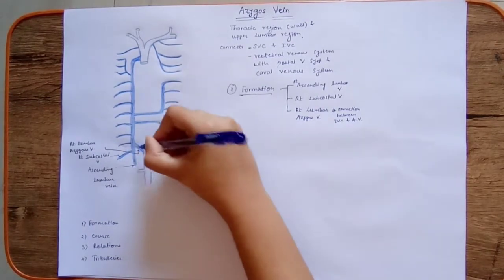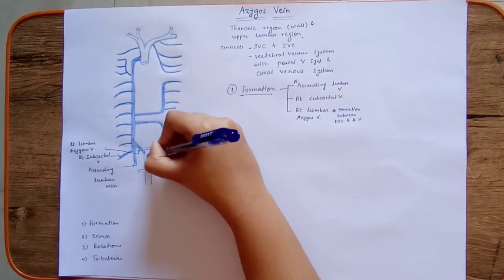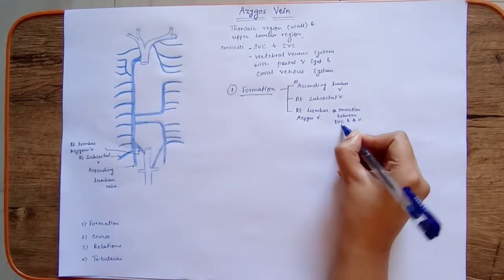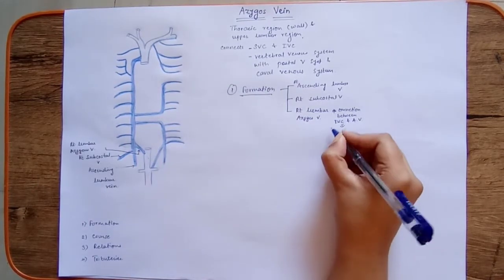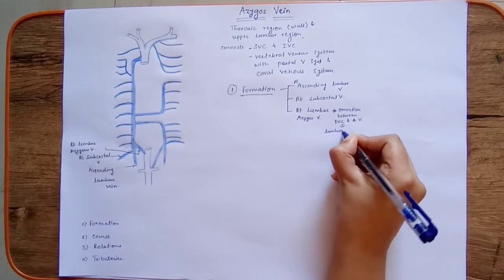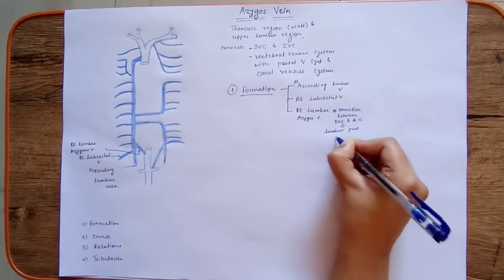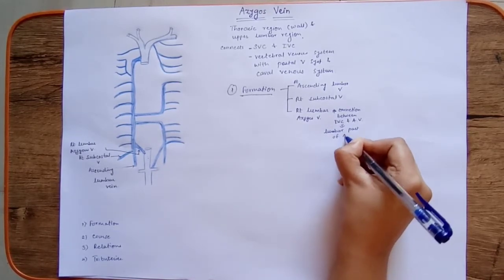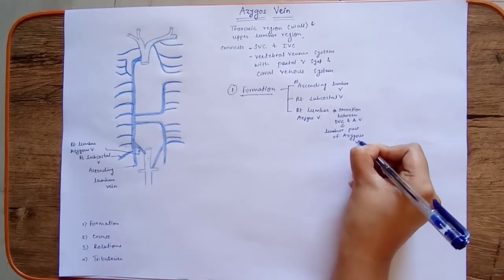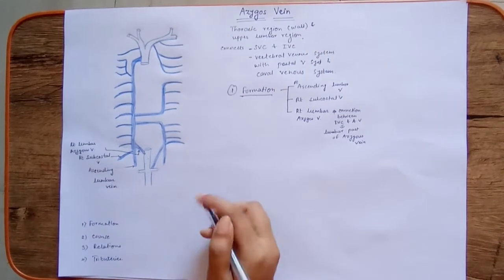As we can see, the lower end is connected with the inferior vena cava. This lower portion is also known as the lumbar part of the azygous vein. So this is all about the formation.